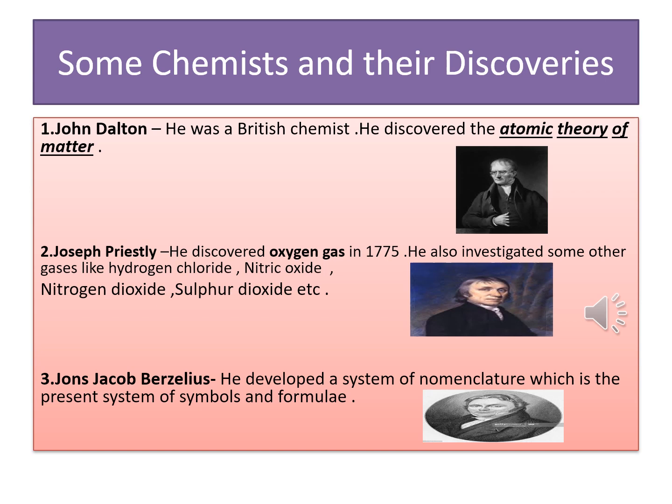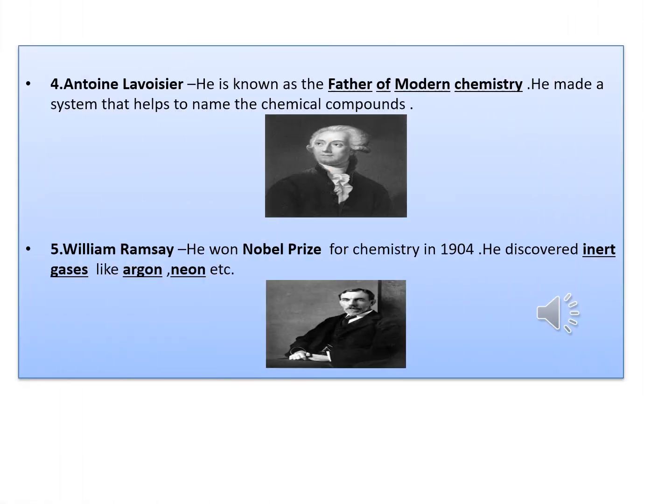Priestley also investigated other gases like hydrogen chloride, nitric oxide, nitrogen dioxide, and sulfur dioxide. The third chemist is Jöns Jacob Berzelius, who developed a system of nomenclature — the present system of symbols and formulas — suggesting a method to write symbols and formulas of elements and compounds. The fourth is Antoine Lavoisier, known as the father of modern chemistry. He made a system that helps to name chemical compounds.